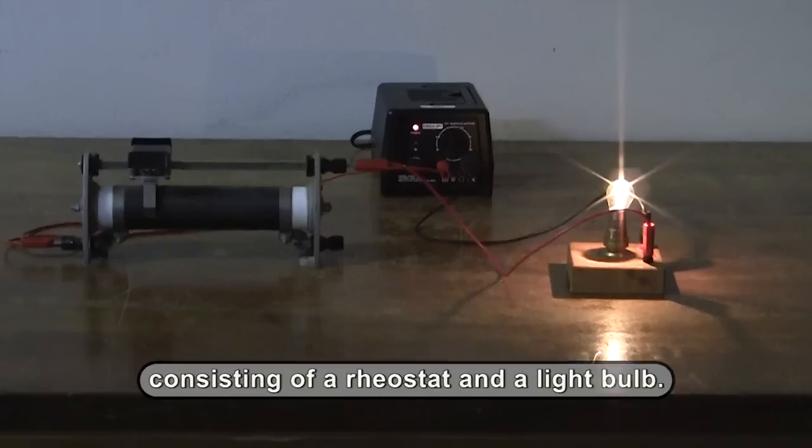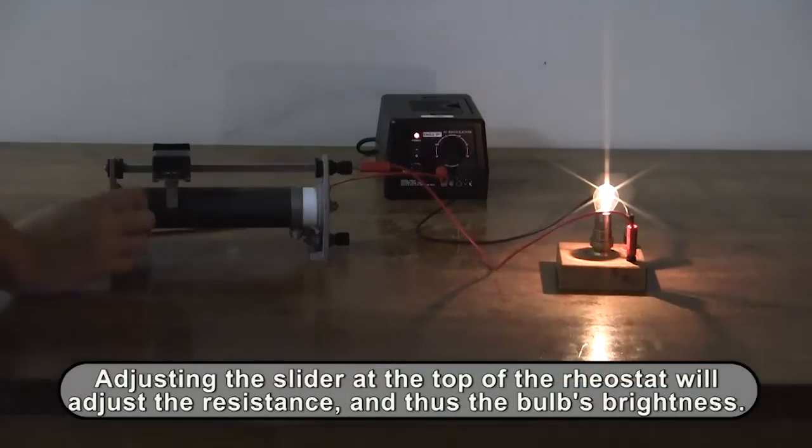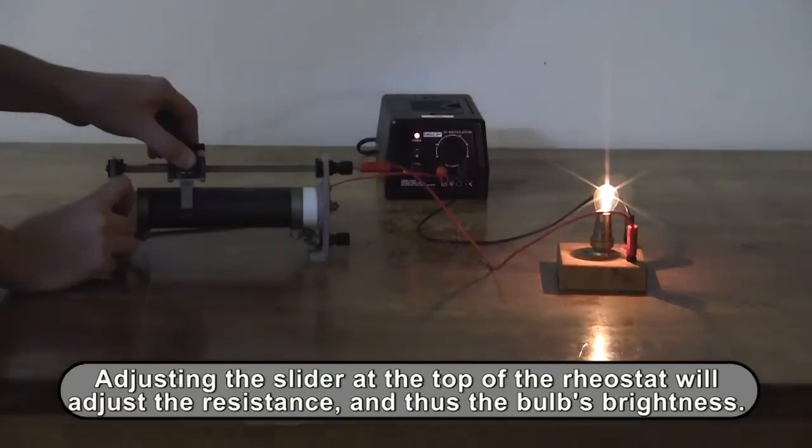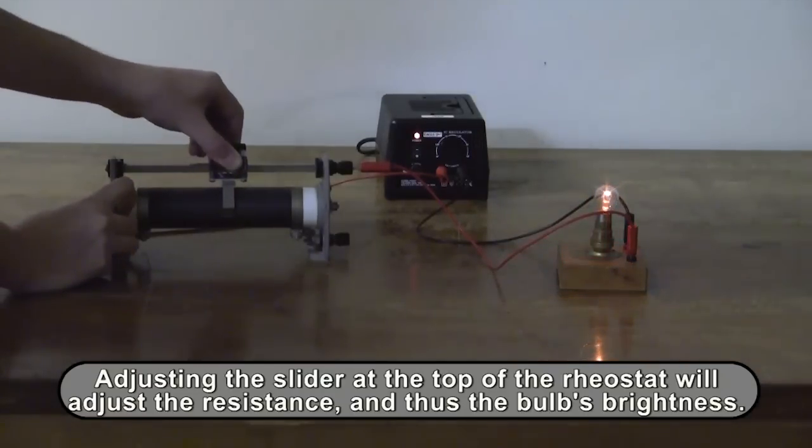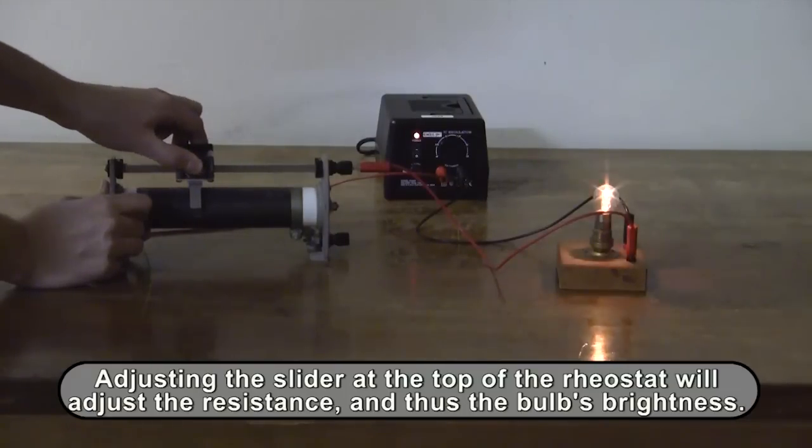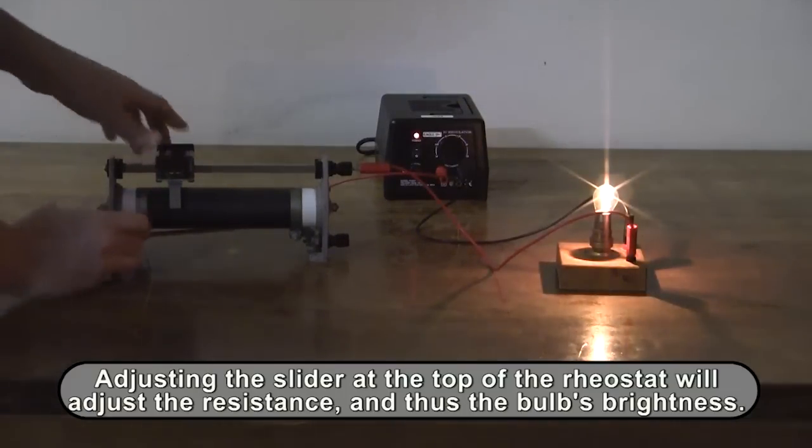A simple circuit consisting of a light bulb and a rheostat is used in this example. A rheostat is a variable resistor. For this example, the rheostat's resistance can be adjusted by moving the slider at the top. As the bulb and the rheostat are in series, adjusting the rheostat's resistance alters the bulb's brightness.